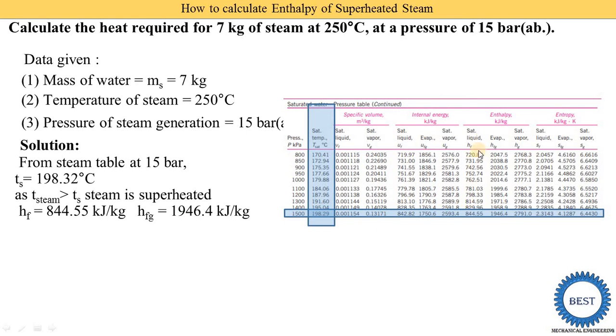We also note down the values of hf and hfg at this pressure of 1500 kilo Pascal. The value of hf is 844.55 kilojoules per kilogram.